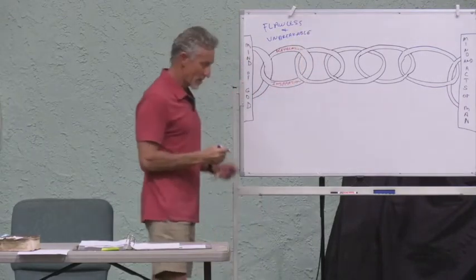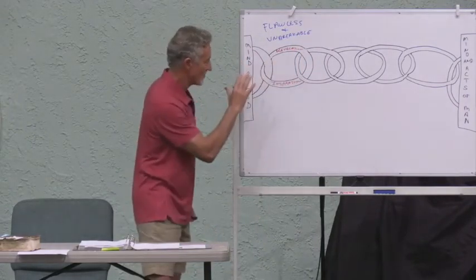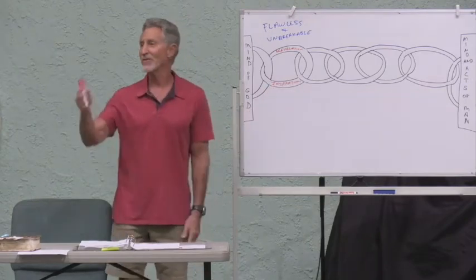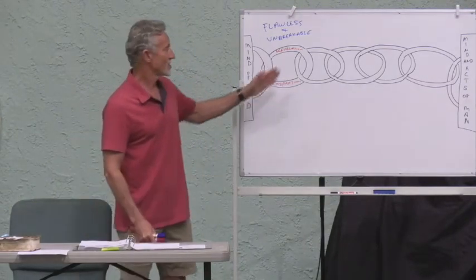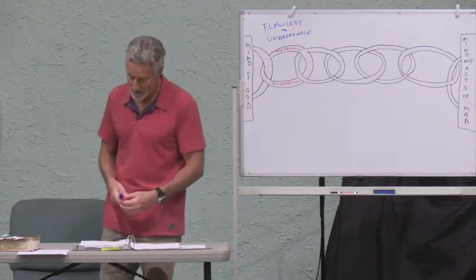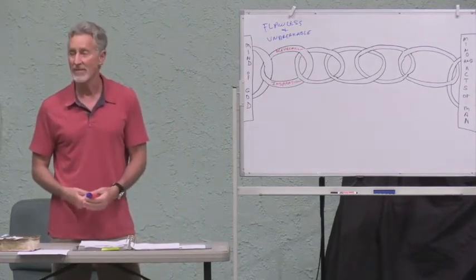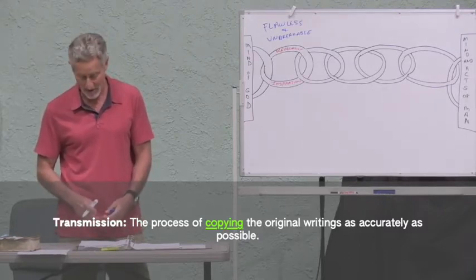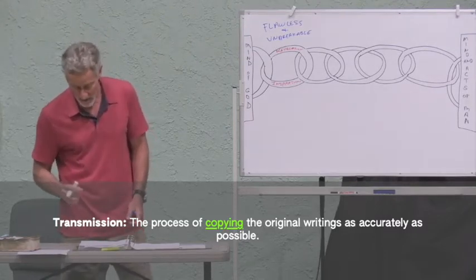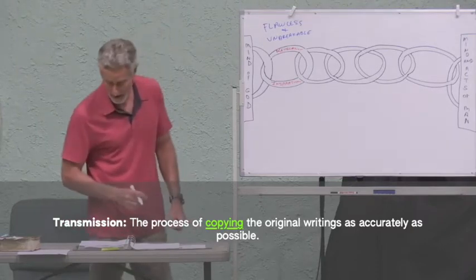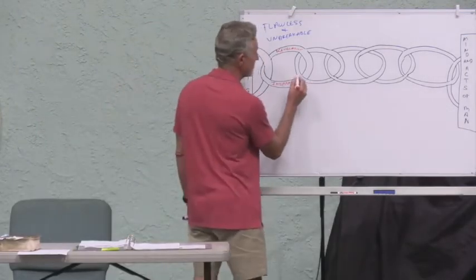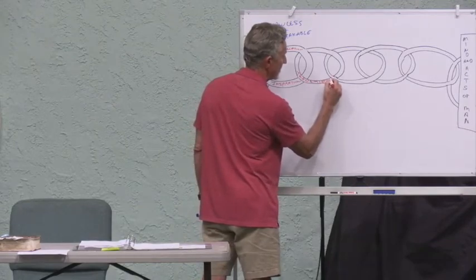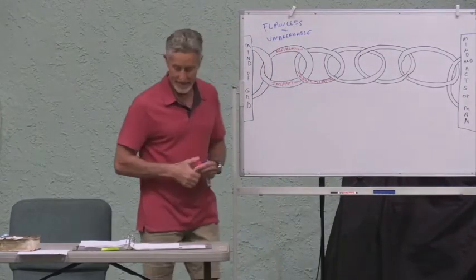This flawless and unbreakable first link gets from God's mind toward your mind. But of course, you weren't there — He didn't inspire you or reveal His word directly to you. So there's another step: transmission. Transmission is the process of copying the original writings as accurately as possible.